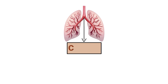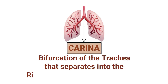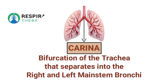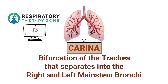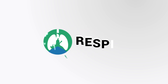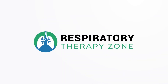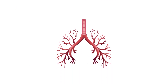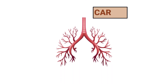The carina is a bifurcation of the trachea that separates into the right and left main stem bronchi. We created this video to cover the medical definition and provide a brief overview of this topic. The carina is located at the lower end of the trachea where it separates into the two main stem bronchi.